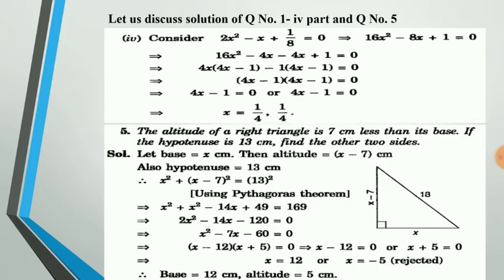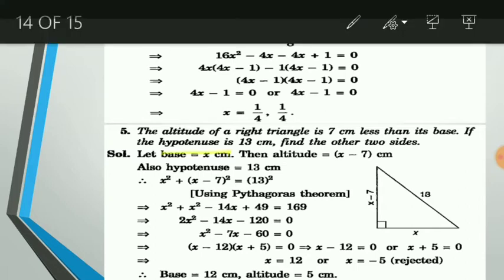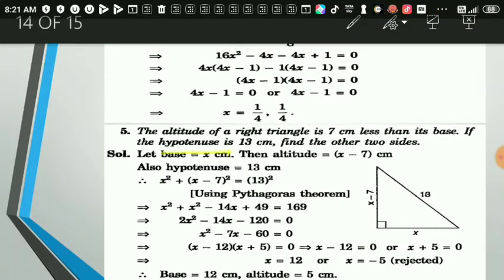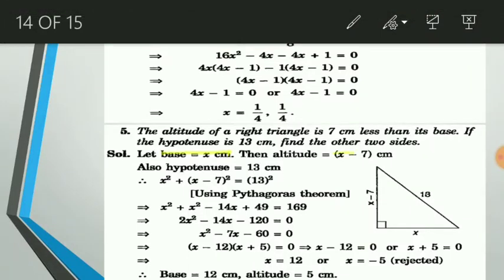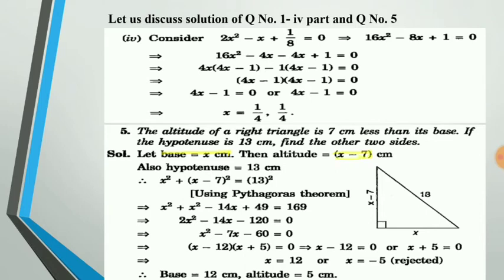For question 5: the altitude of a right triangle is 7 cm less than its base, and the hypotenuse is 13 cm; find the other two sides. Let the base be x, then the altitude is x - 7. Applying Pythagoras theorem: x² + (x-7)² = 13², which simplifies to x² - 7x - 60 = 0.